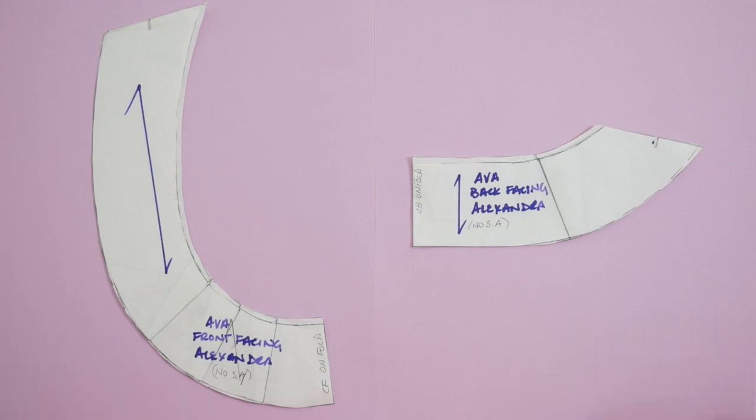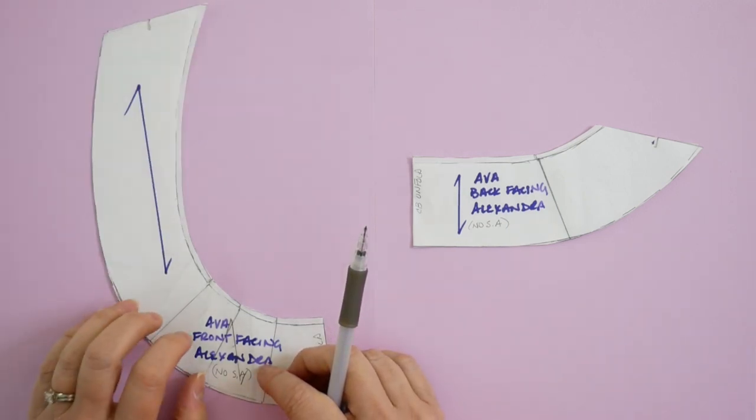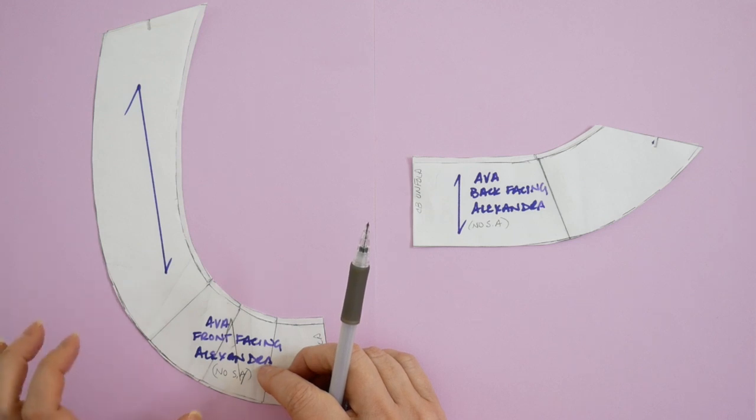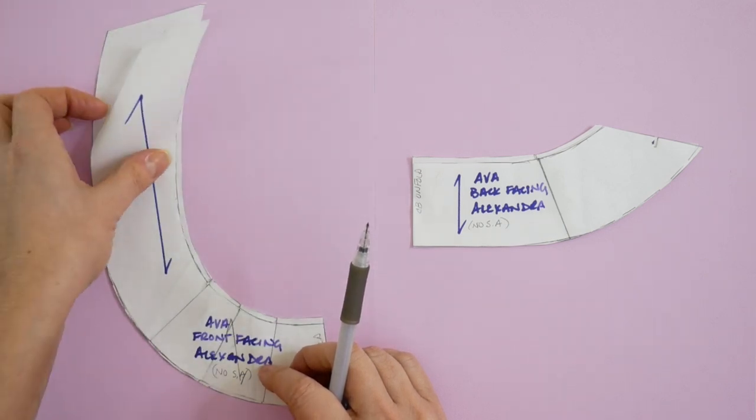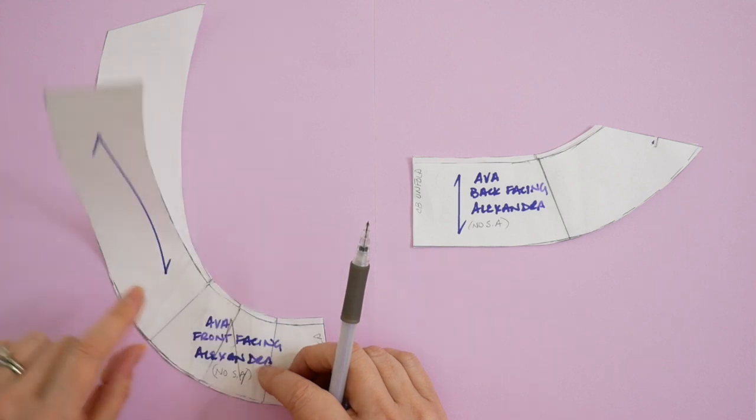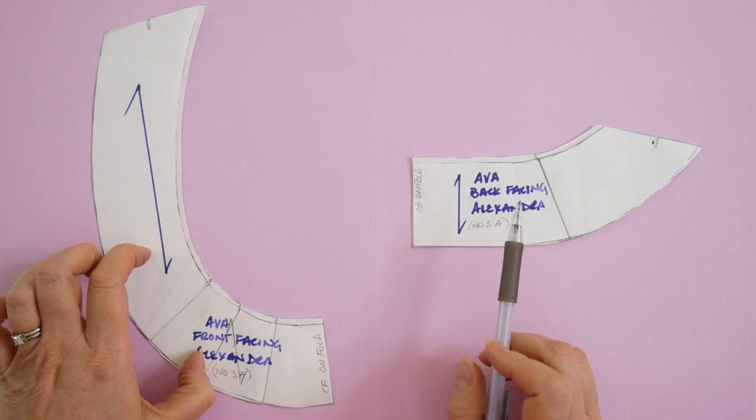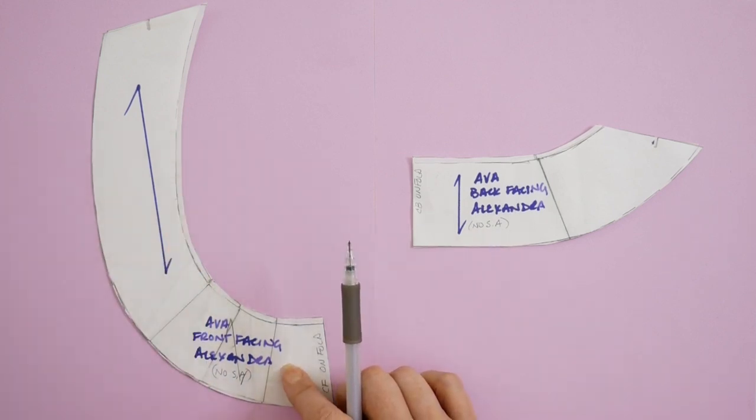So you'll see here that I actually have two layers of patterns here. The one on top is the one that I used to create my sample, and the one underneath is just one that I recreated, which is an exact tracing of the neckline from the main pieces of the pattern. So this is always the starting point for any kind of neckline facing.